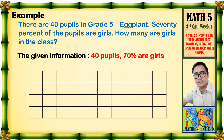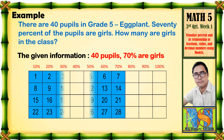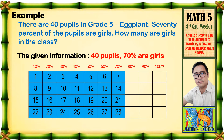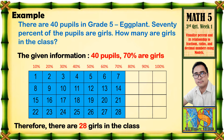Paano maging 100% yan? Tingnan natin mabuti. Yung unang column ay considered as 10%, pangalawang column ay 20%, pangatlo ay 30%, pangapat ay 40%, panglima ay 50% hanggang 100%. Hanapin natin kung nasaan ang 70%, at ito yun. Bilangin natin kung ilang pupils ang meron sa 70% — nakikita natin, meron tayong 28 na pupils. Therefore, there are 28 girls in the class.